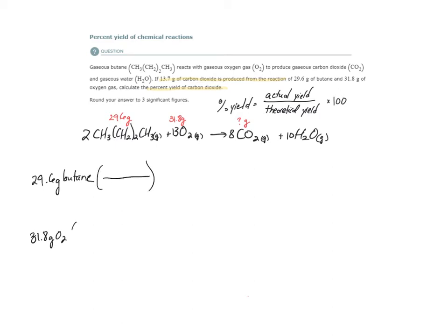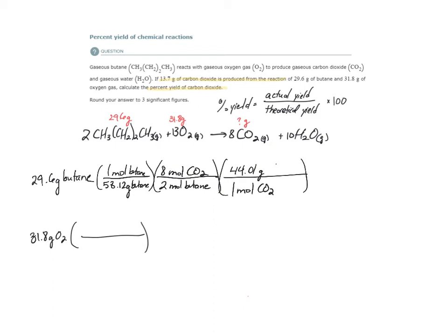We discussed this in our limiting reactant topic. We're going to follow the same process. I'm going to start with my mass of both reactants. This is butane, and I have 31.8 grams of oxygen. I'm going to convert to a mass of CO2 for both of these reactants. The molar mass of butane is 58.12 grams per one mole. From the balanced equation, I see that two moles of butane are consumed to produce eight moles of CO2. And then one mole of CO2 has a mass of 44.01 grams.